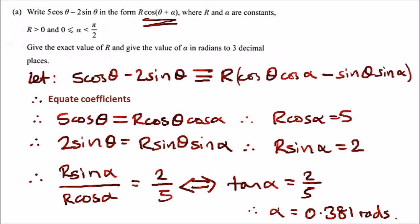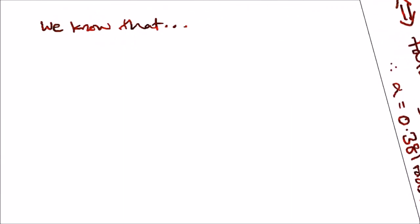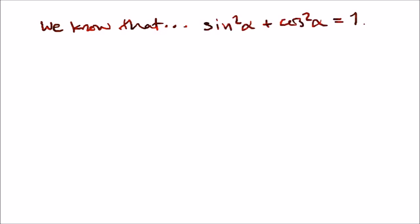Now as for r, for r all we can do is use two ways, but in this case we're going to use the trigonometric identity. First things first, we should know off the bat by now that sine squared alpha plus cos squared alpha would always equal one, at least if they're both alphas.